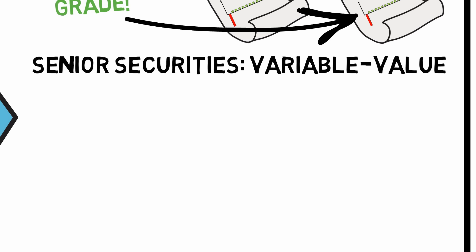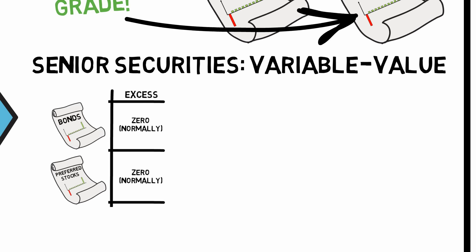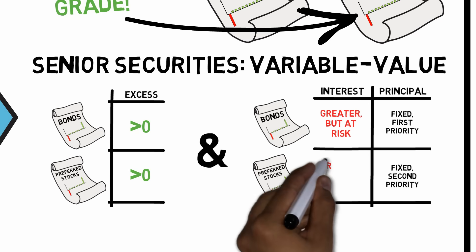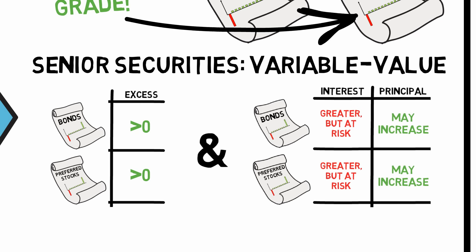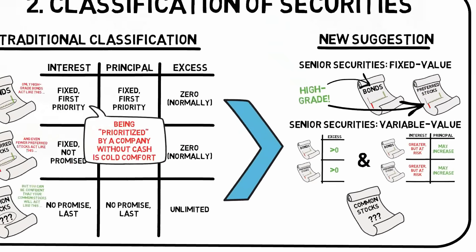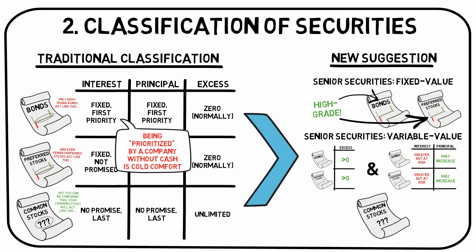The second category is made up of senior securities of variable value. It's divided in two parts: Issues of high-grade, but that at the same time have profit possibilities, such as convertible bonds, and issues of inadequate quality, such as low-grade bonds and preferred stocks. The last category is common stocks. We'll examine these categories in greater detail in the third and fourth video of this series.